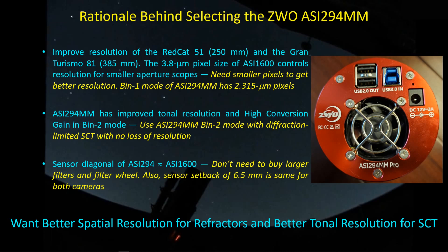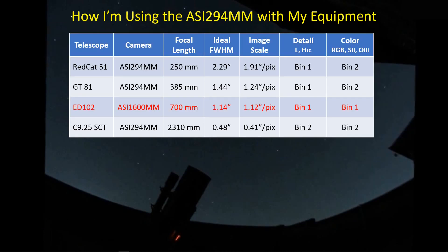Better spatial resolution for the small refractors and better tonal resolution for the SCT. I have the telescopes that I have — the RedCat 51, the C925 SCT — with corresponding focal lengths here in this third column. And then over here you can see the camera that I will be using from now on with these telescopes. What I wanted to do was to get better image resolution, better spatial resolution out of these two small diameter telescopes.